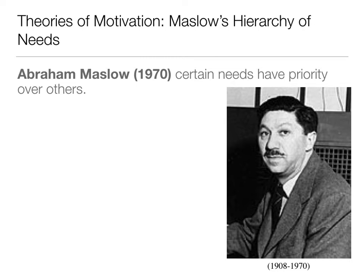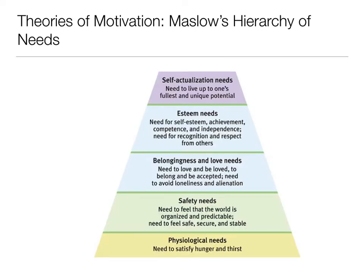The third theory is Maslow's hierarchy of needs, which says certain needs have priority over others. His hierarchy has a pyramid shape, and Maslow says you have to take care of the base first before worrying about higher levels. Our primary motivations are physiological needs — hunger, thirst, and so on. After that come safety needs, then belongingness and love needs — the need to be accepted and to avoid loneliness, alienation, and ostracization. Then we have esteem needs: feeling good about ourselves, feeling competent and independent, and gaining recognition and respect from others.